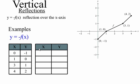The second type of transformation that we want to look at is referring to vertical and horizontal reflections.